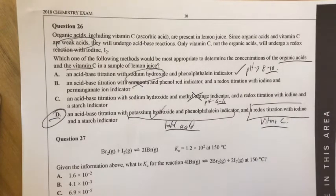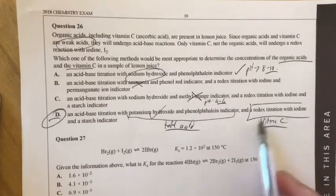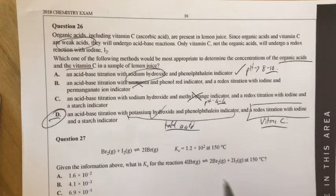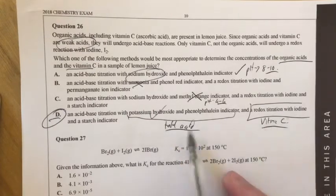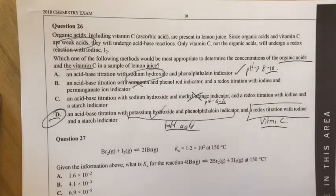So therefore, what that's going to allow you to do is find the vitamin C concentration but also the total acids, or if you wanted to, you'd take away the vitamin C from the total acids to work out how many of the other organic acids are there as well. So the answer there is actually D.